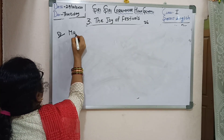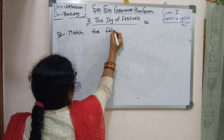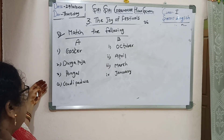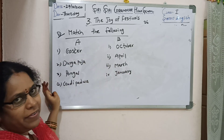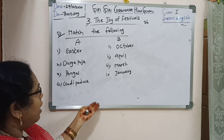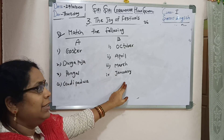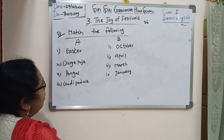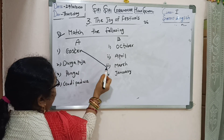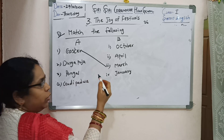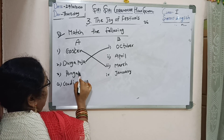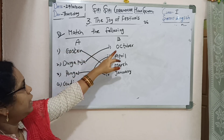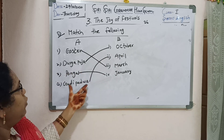Match the following, page number 26. We have festival names and months — match the festival to the month it falls in. Easter is in March. Durga Puja is in October. Pongal is in January. Gudi Padwa is in April. Easter — March; Durga Puja — October; Pongal — January; Gudi Padwa — April.